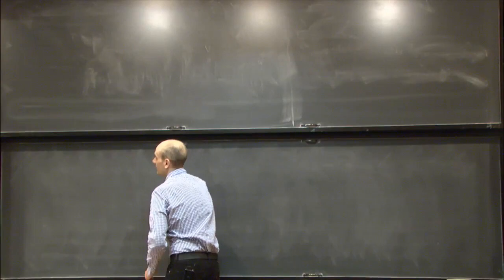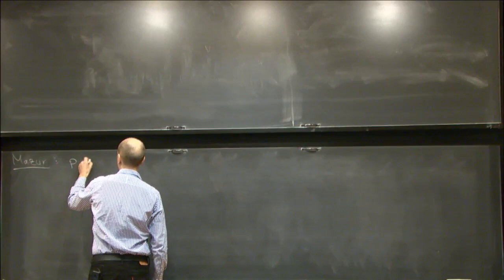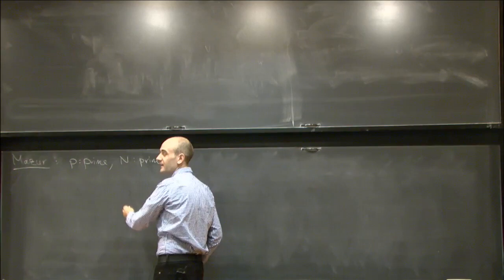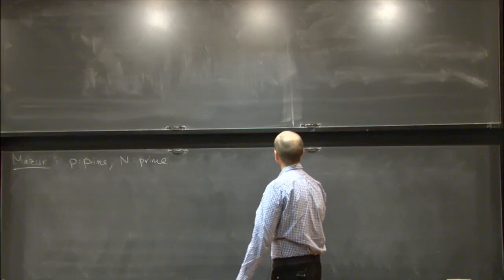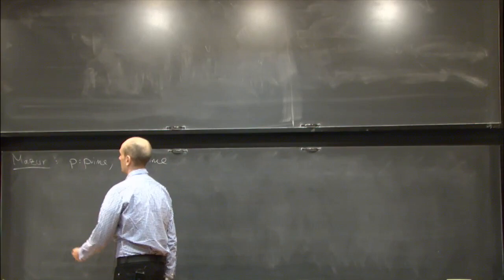I want to talk about the rank of Mazur's Eisenstein ideal. I'll start by reminding us what was the situation Mazur was thinking about. So in this story, we have p as a prime and N is also another prime. We use the letter capital N because that will be the level, but we're only specifically talking about prime level. Mazur was interested in congruences between Eisenstein series and cusp forms.